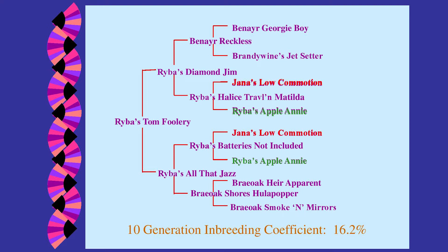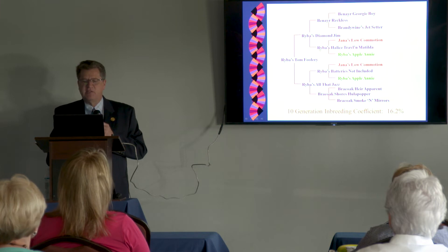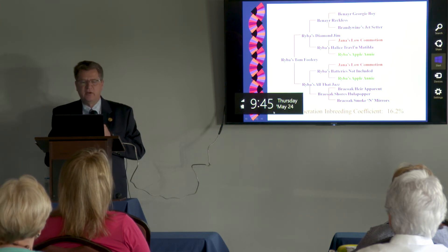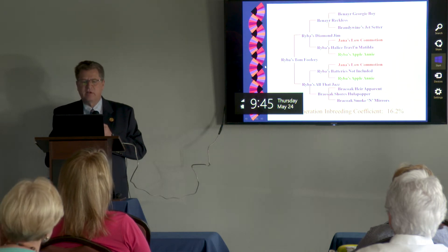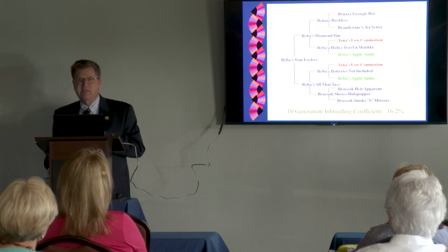Rebus Hallis Travelin Matilda and Rebus Batteries Not Included are full siblings — they could be littermates or from a repeat mating, but for genetics, what matters is they have the same pedigree. So the sire and dam of Tomfoolery — Rebus Diamond Jim and Rebus All That Jazz — are first cousins. Their total 10-generation inbreeding coefficient is 16.2%, and the first cousin mating by itself adds 6.25% to that coefficient.